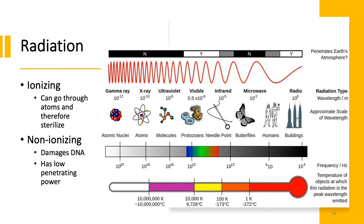Then we have radiation, which can be classified into two types. The first is ionizing radiation, which can go through atoms and therefore sterilize objects by killing all microorganisms. Examples of ionizing radiation are gamma rays and x-rays. Then we have non-ionizing radiation, of which UV or ultraviolet rays are an example. This kind of radiation damages DNA but has low penetrating power. So when using ultraviolet rays, you would need a longer contact time, and note that ultraviolet rays are only able to disinfect surfaces.